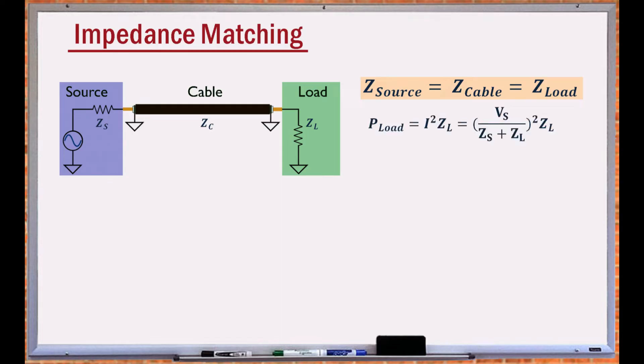Impedance matching maximizes the power transfer to the load and eliminates signal reflection. A perfect impedance matching transfers half of the source power to the load.